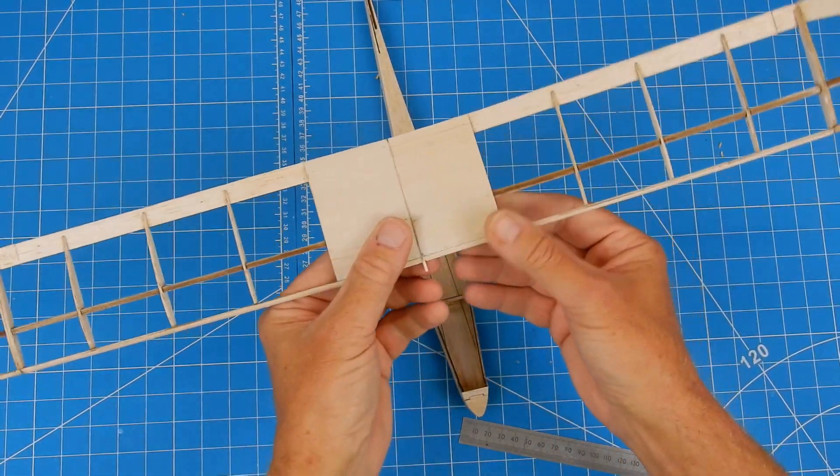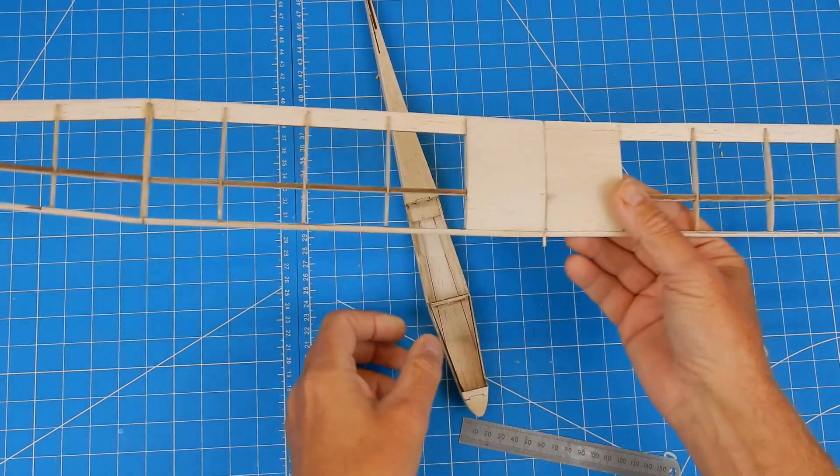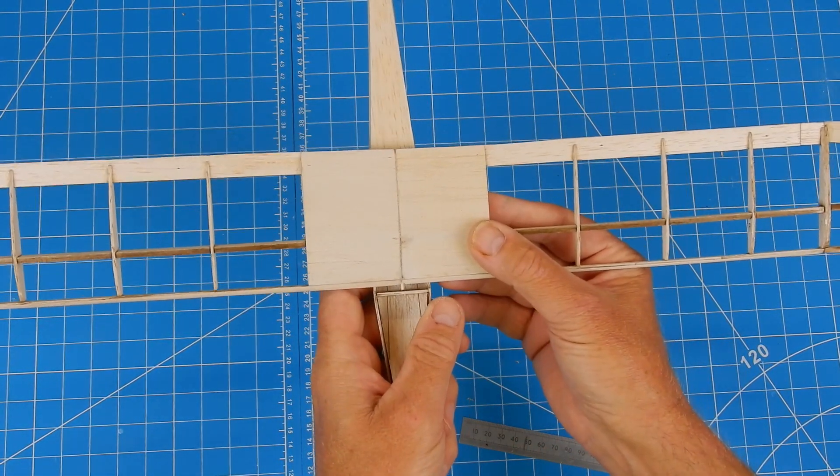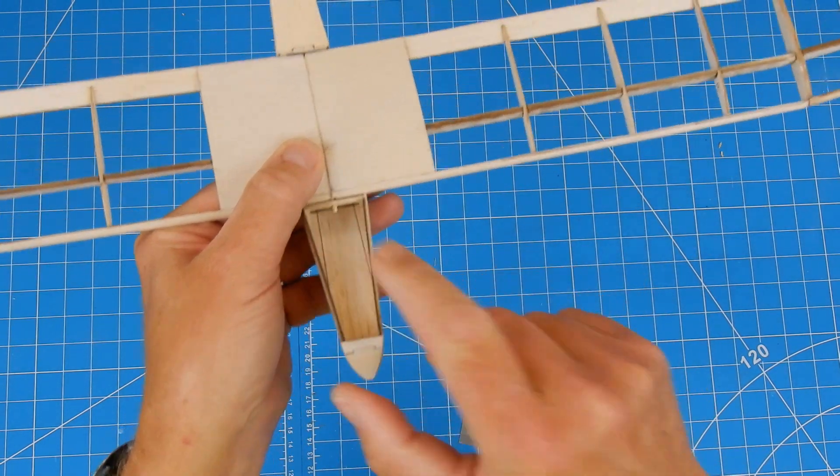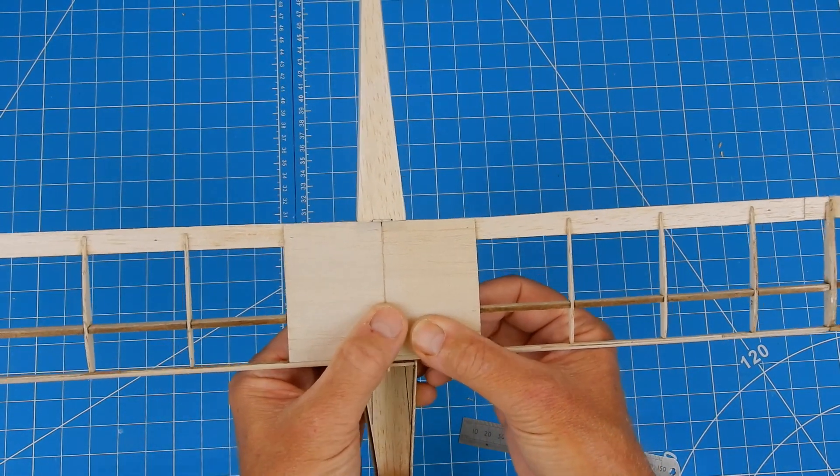Okay sorted out the wing dowel. I've not glued it in yet just because we need to do a little bit of jiggling and wiggling. So that's my wing dowel sorted there. That's gone in very well.